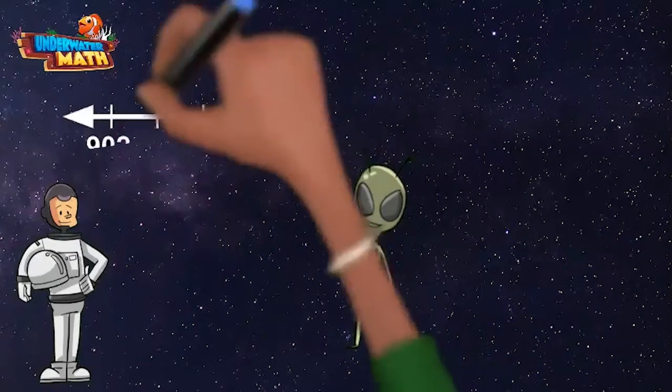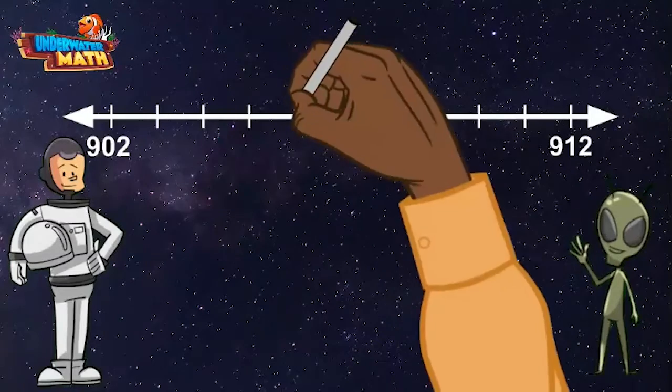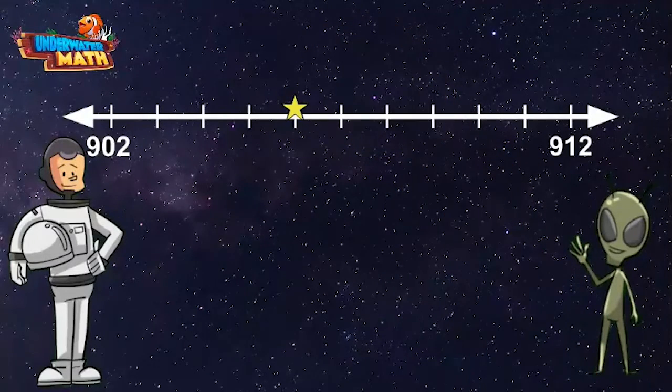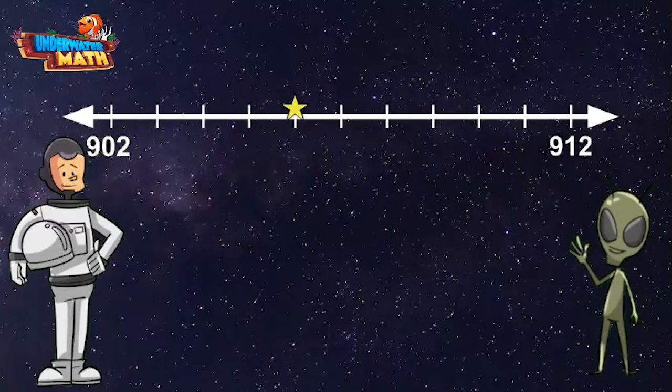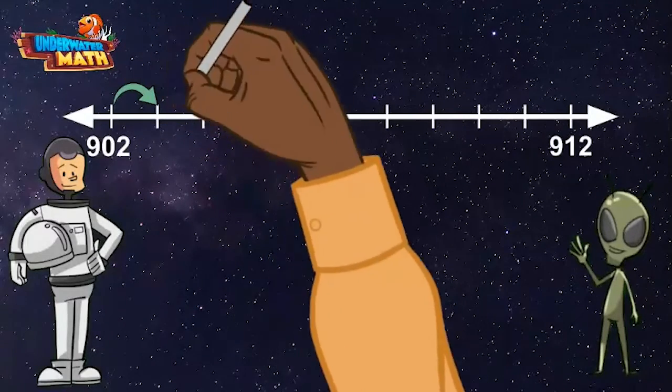line that starts at 902 and ends at 912. You are the best, thanks. Now I'm going to put the star right here. What number does the star represent this time? Let's start at 902 and count up: 903, 904,